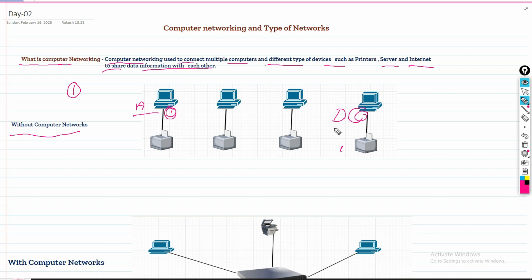The second difficulty: if you want to print any document, if you want to print something on computer A, you should have a printer connected here. You should also have a printer connected here. Every PC should have a connected printer without computer networking, so it will be costly and time-consuming.